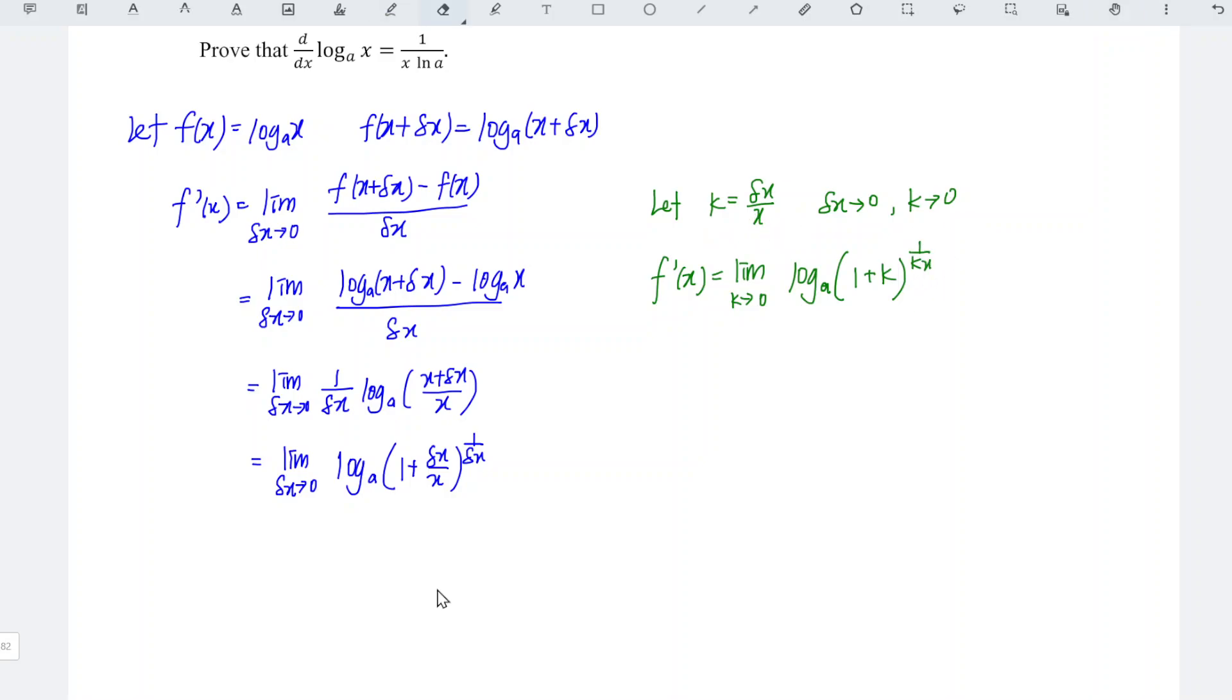Now let's apply the log of indices and rewrite the power variable. So we should have limit as k approaches 0 of log to the base a of 1 plus k to the power of 1 over k times 1 over x.